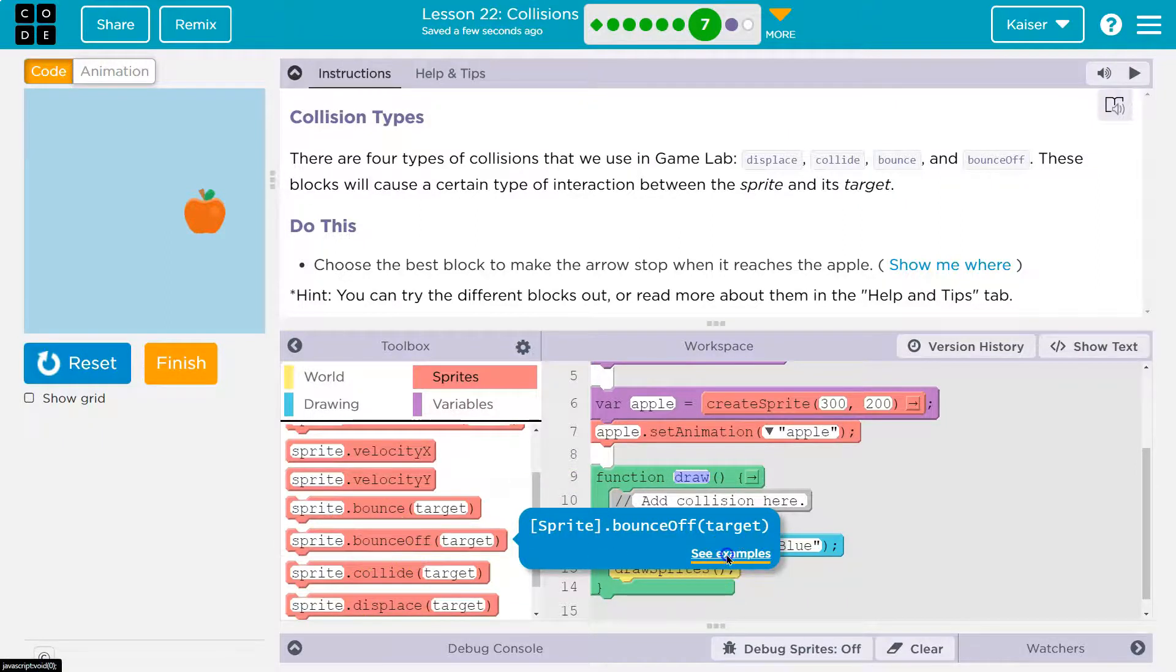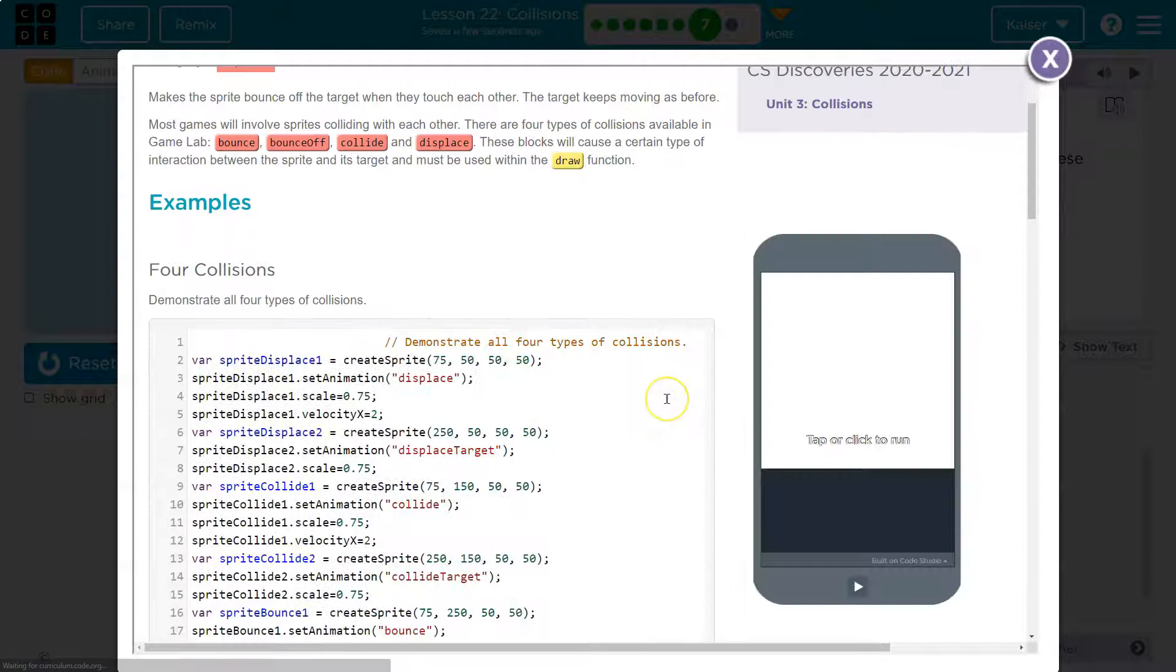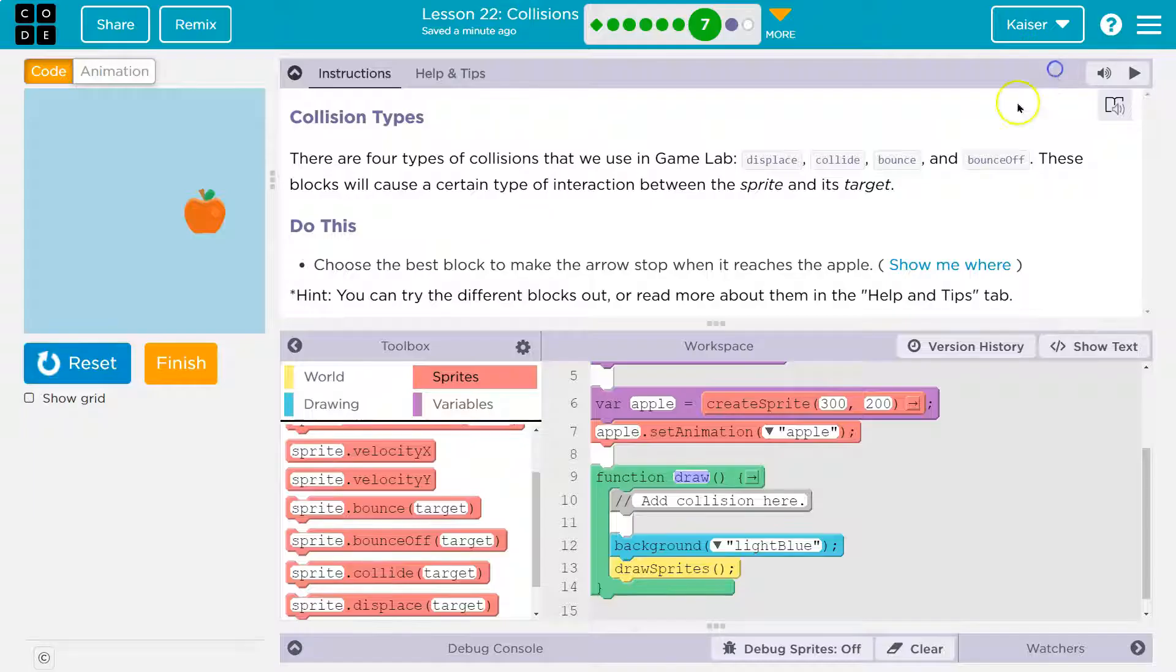If I hover over them and click 'see examples,' I can get a bunch of info about them. Colliding with each other's four types. There's even an example right here. Super useful.